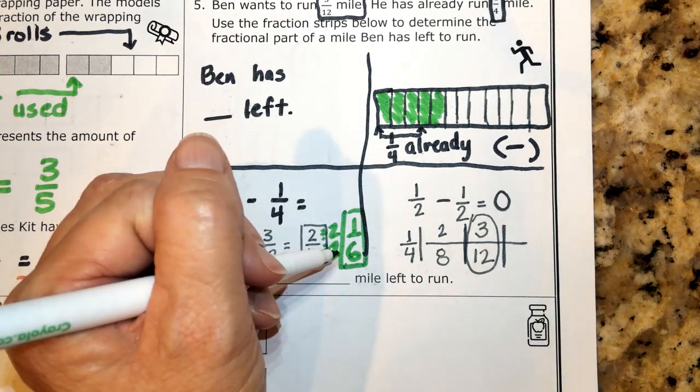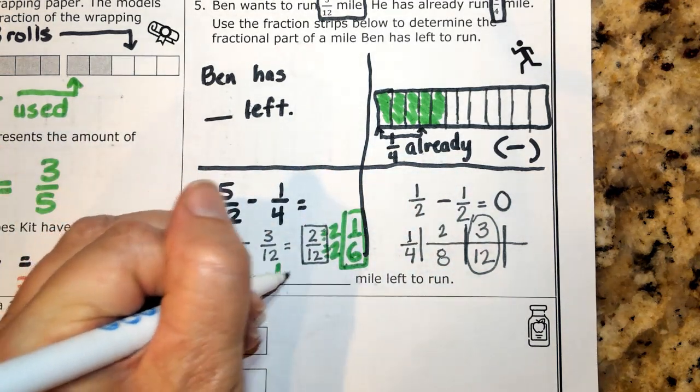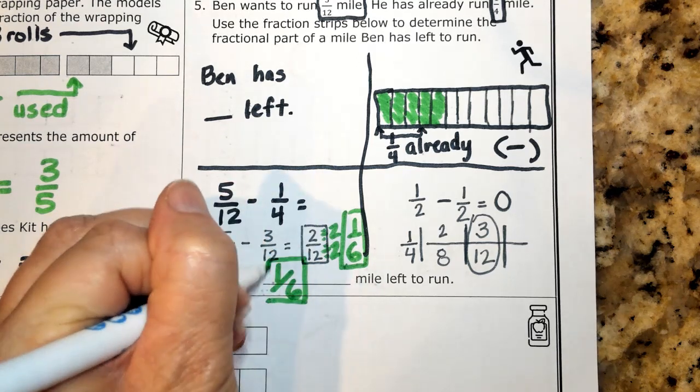And you know, 1 sixth is also very close to 0. So how much does Ben have left to run? He has 1 sixth left.